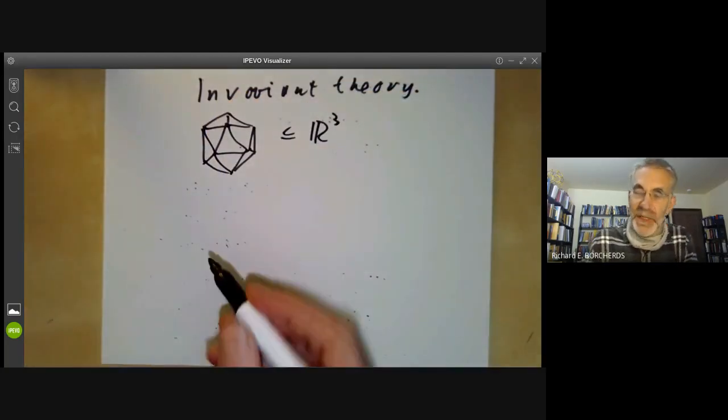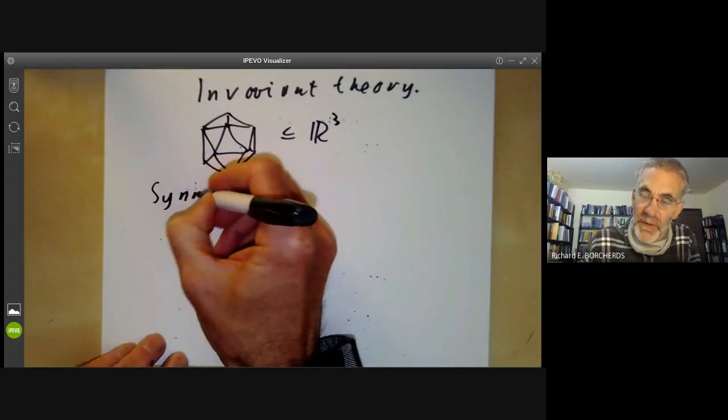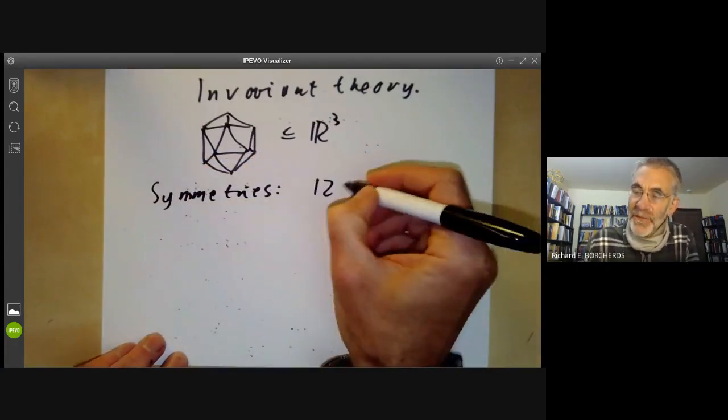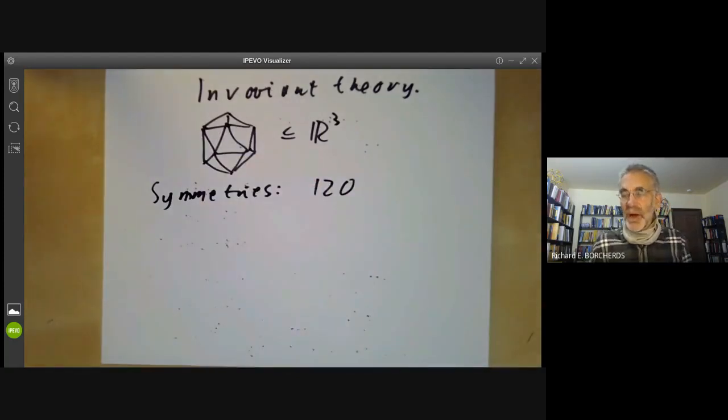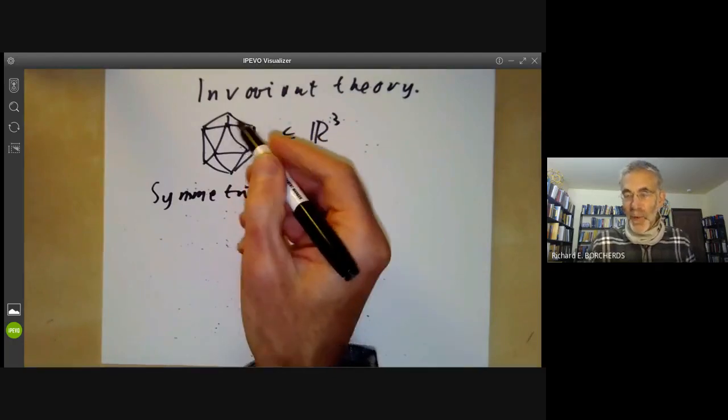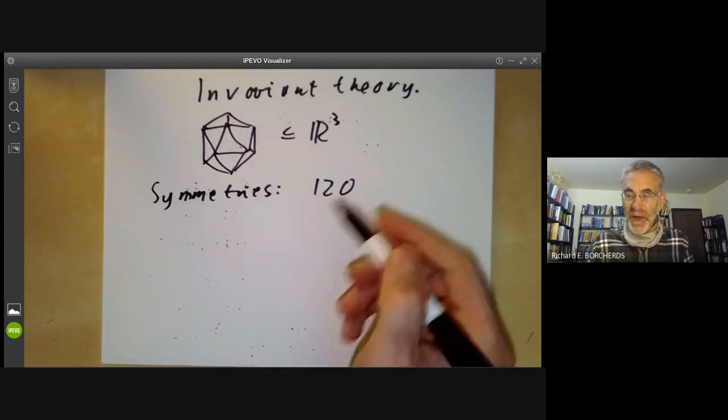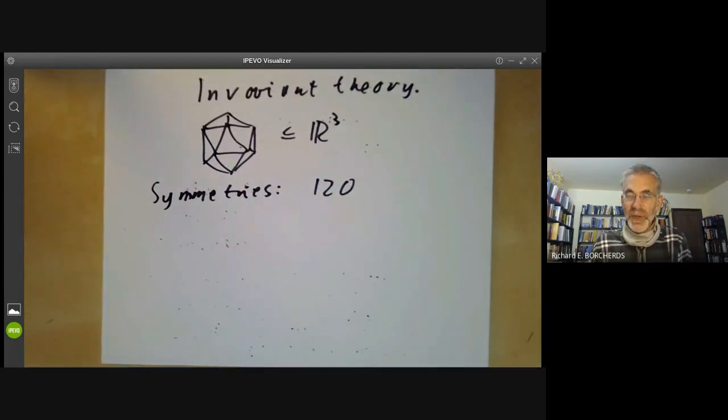You might look at the symmetries of the icosahedron. The symmetries form a group of order 120, because it's got 20 faces. Once you fix a face, there are three possible rotations and also some reflections. So you get 120 symmetries.